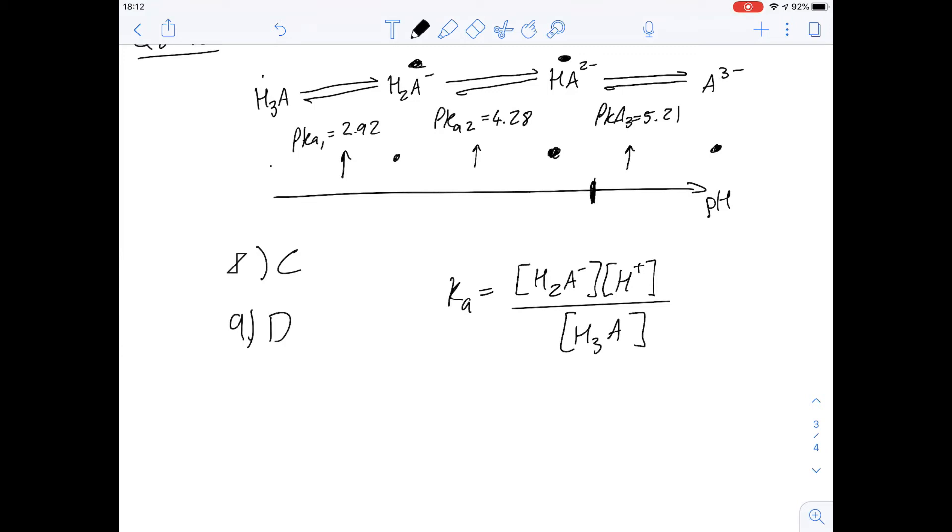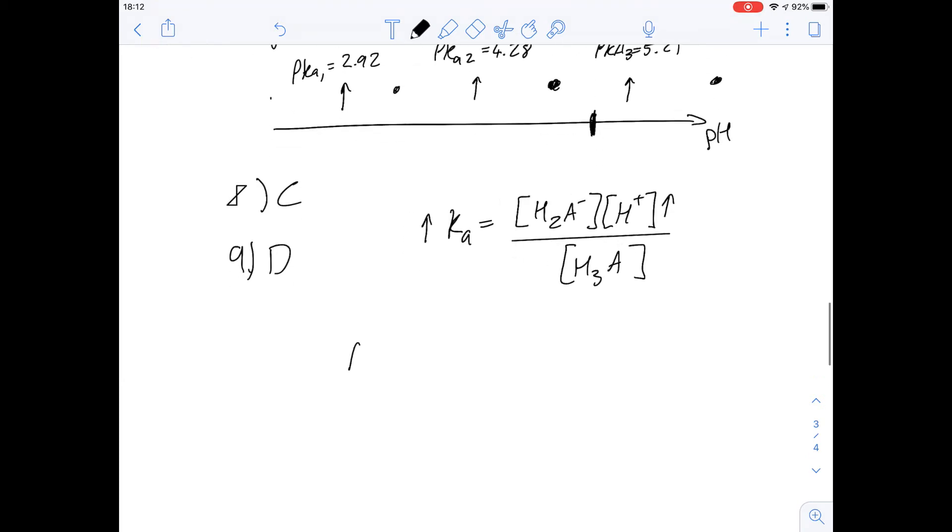If you've got an increase in the number of deprotonated species, that means there's going to be an increase in the number of hydrogen ions, so that increases the value of Ka. So what is pKa then? Well it's simply the negative log of Ka, so if you increase Ka, because you're taking the negative log of it, pKa will decrease.